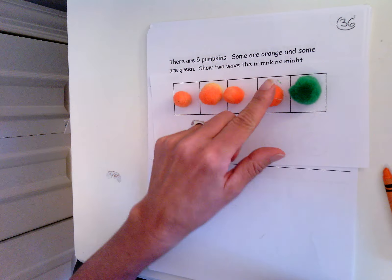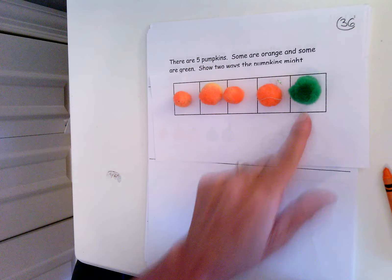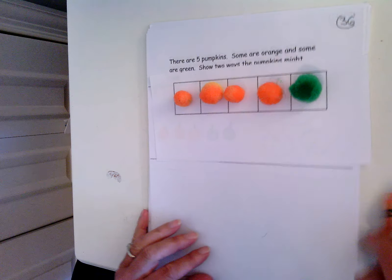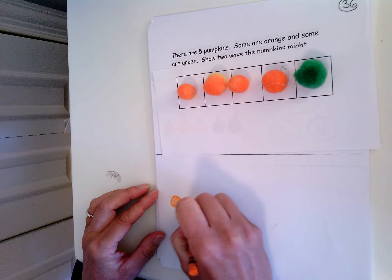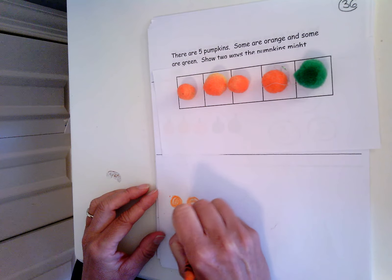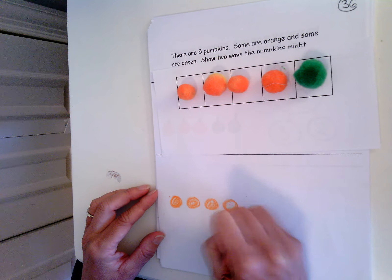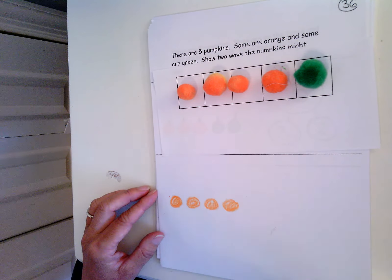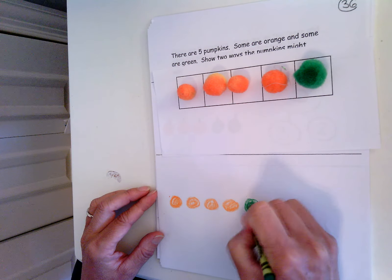Some are orange, some are green. So let's show that way. So I have four orange pumpkins. And one green pumpkin. And that is another way to make five.